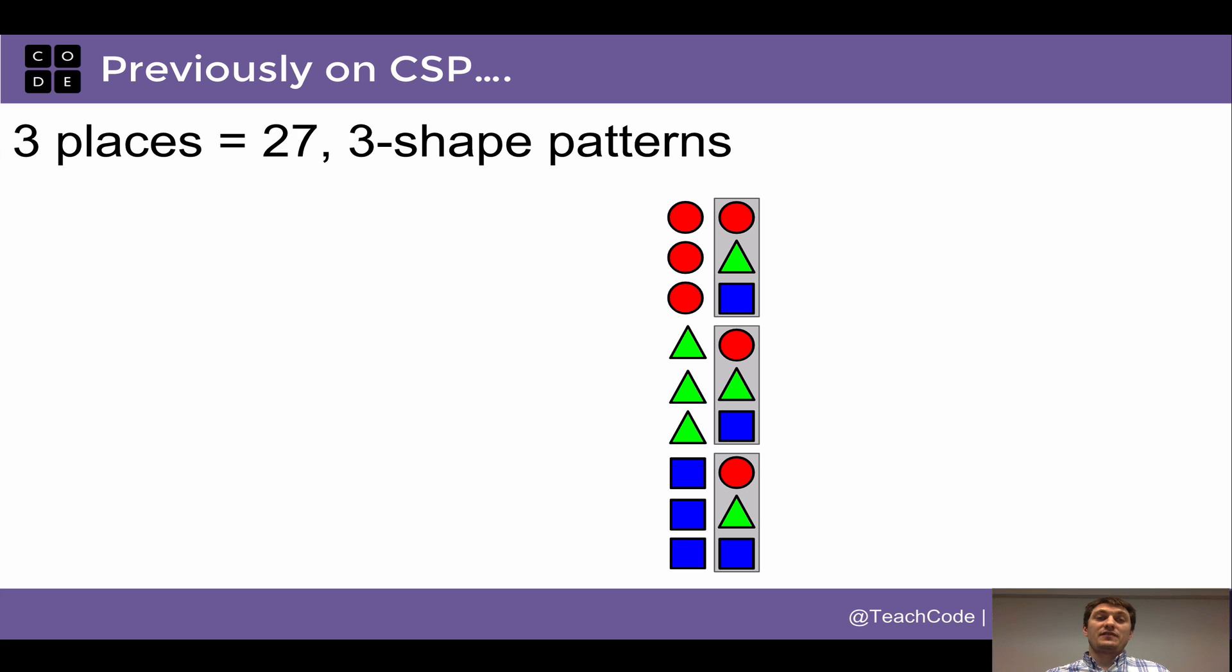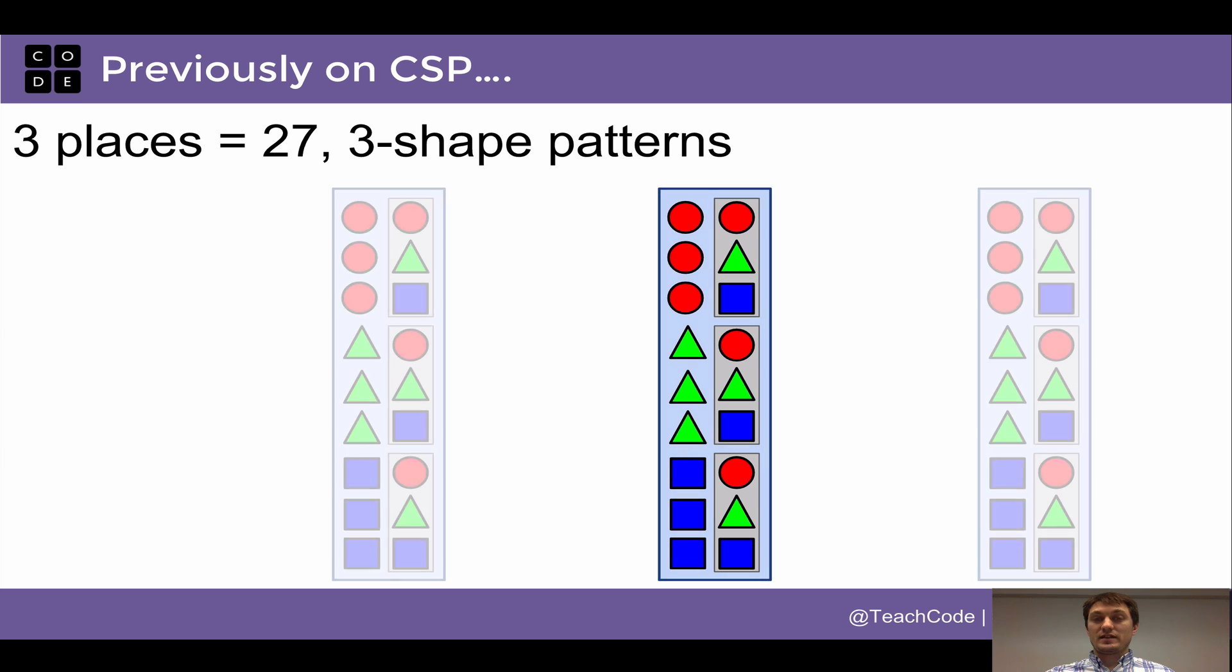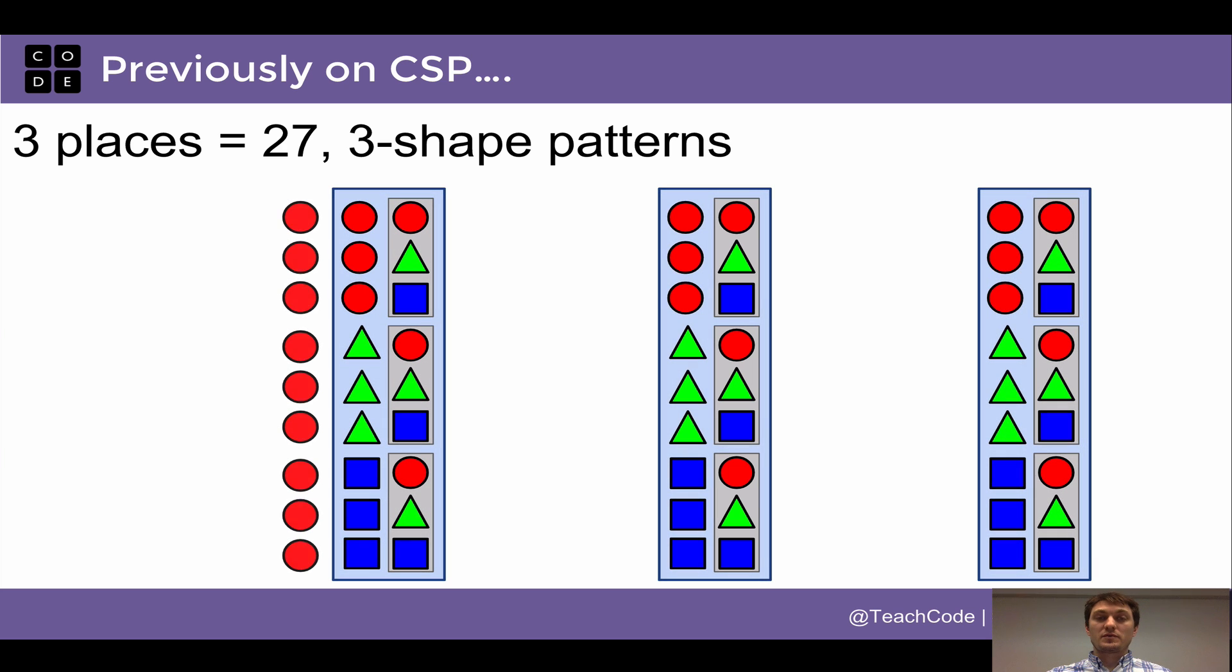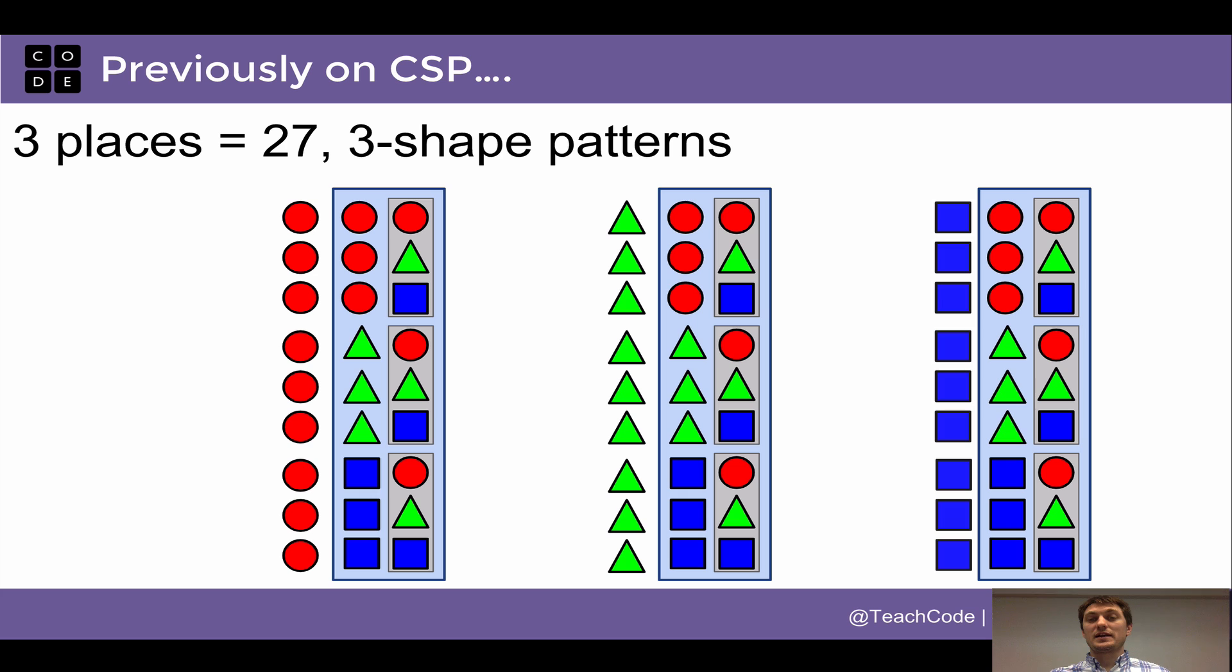And I can repeat this if I want to make three, I have three places to put shapes, I can make three shape patterns, there are 27 of them, and I can make them by making a group out of the patterns that I already know and then throwing a circle in front of each one, a triangle in front of each one, or a square in front of each one. And in this way, I can quickly and easily generate the 27 possible three-shaped patterns.